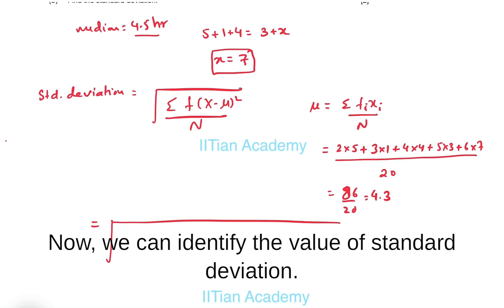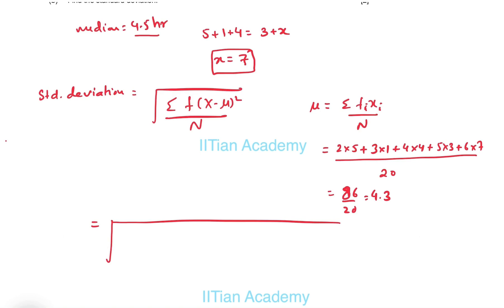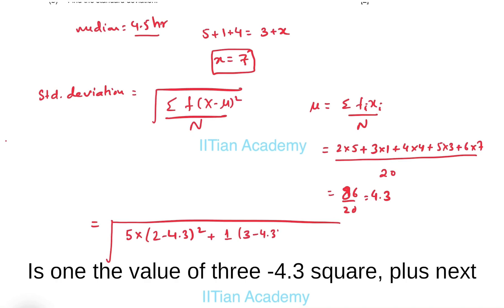Now we can identify the value of standard deviation. It will be the summation of frequency: five into two minus 4.3 squared, plus next frequency one into three minus 4.3 squared, plus...